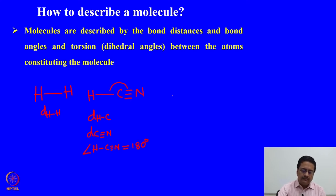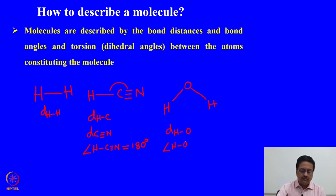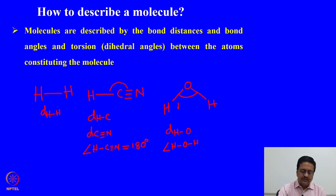We have a simple molecule, water, which is also a triatomic molecule. Here what we need to know are the distances of hydrogen to oxygen and the angle H-O-H, which from spectroscopic data we know is about 104 degrees.